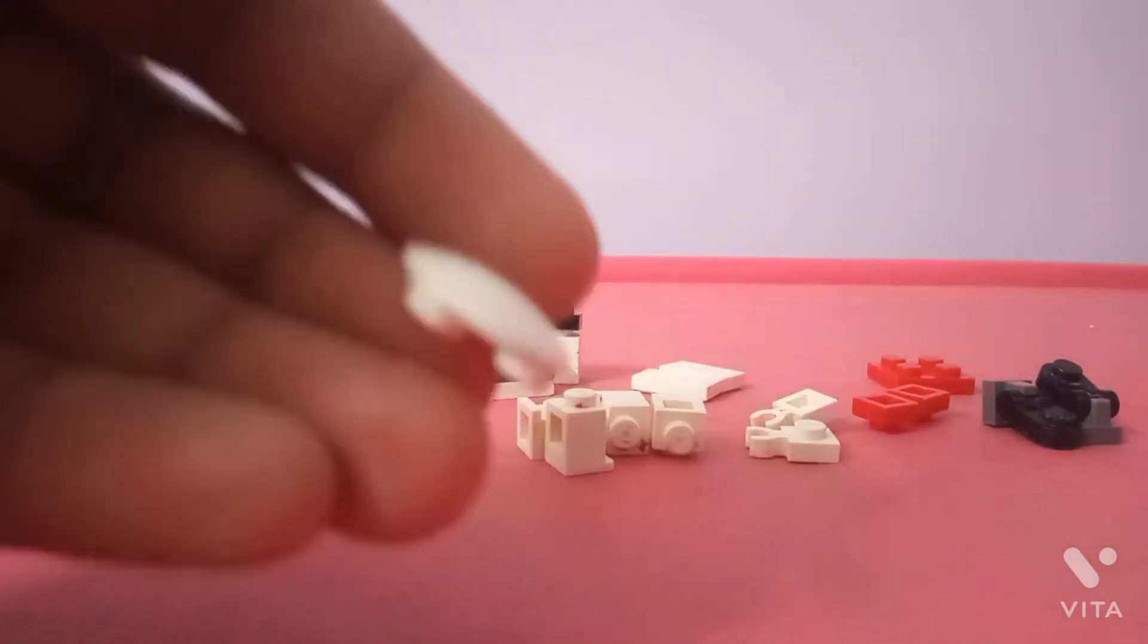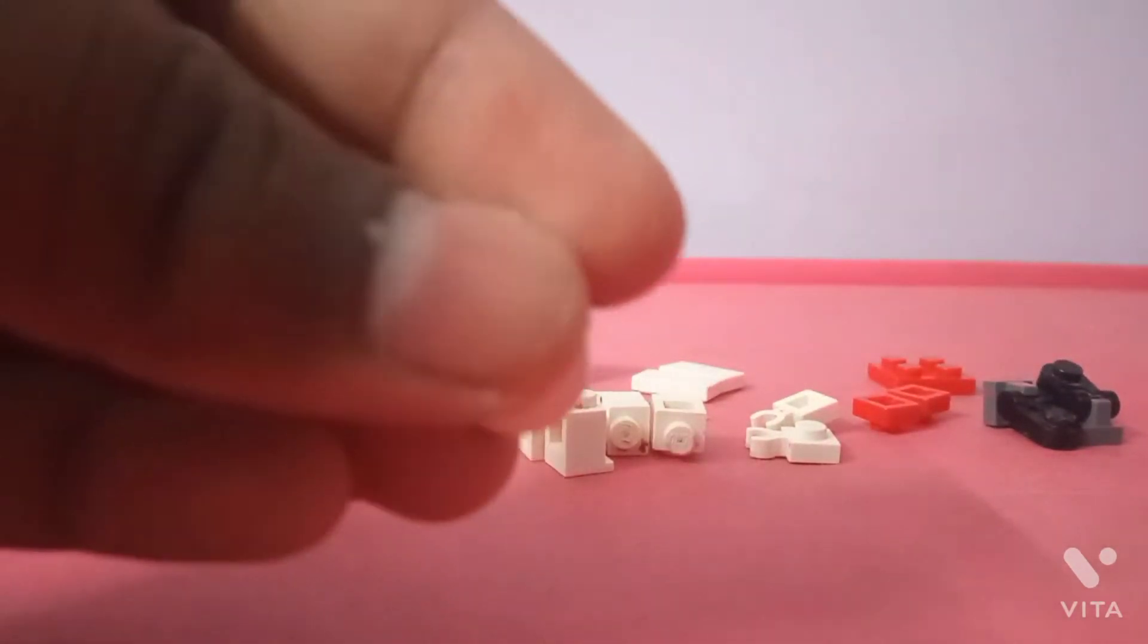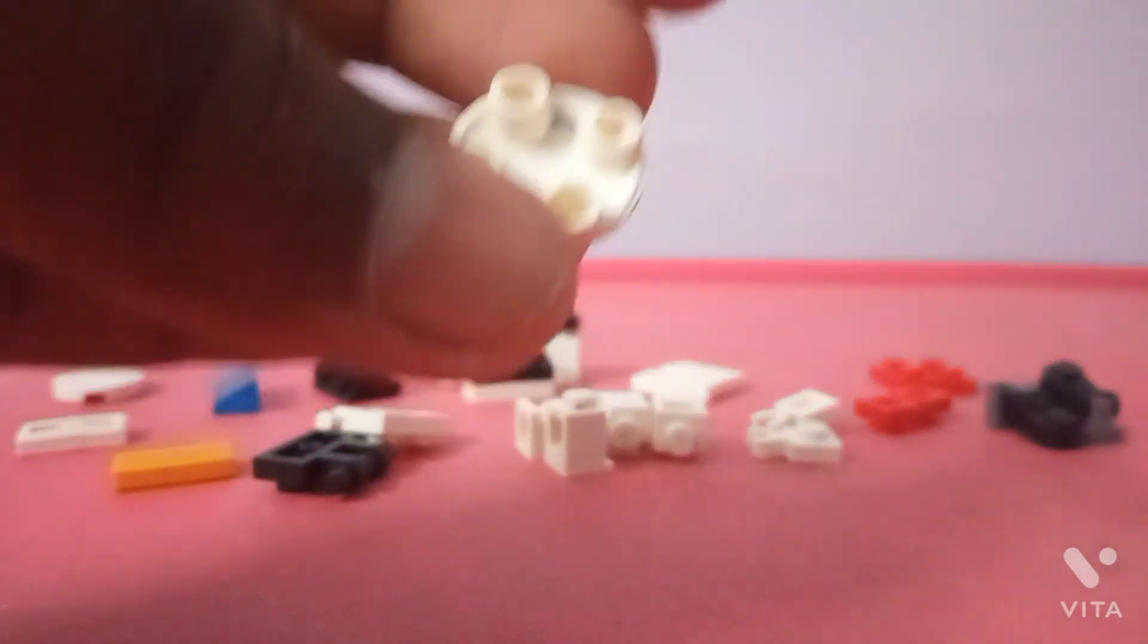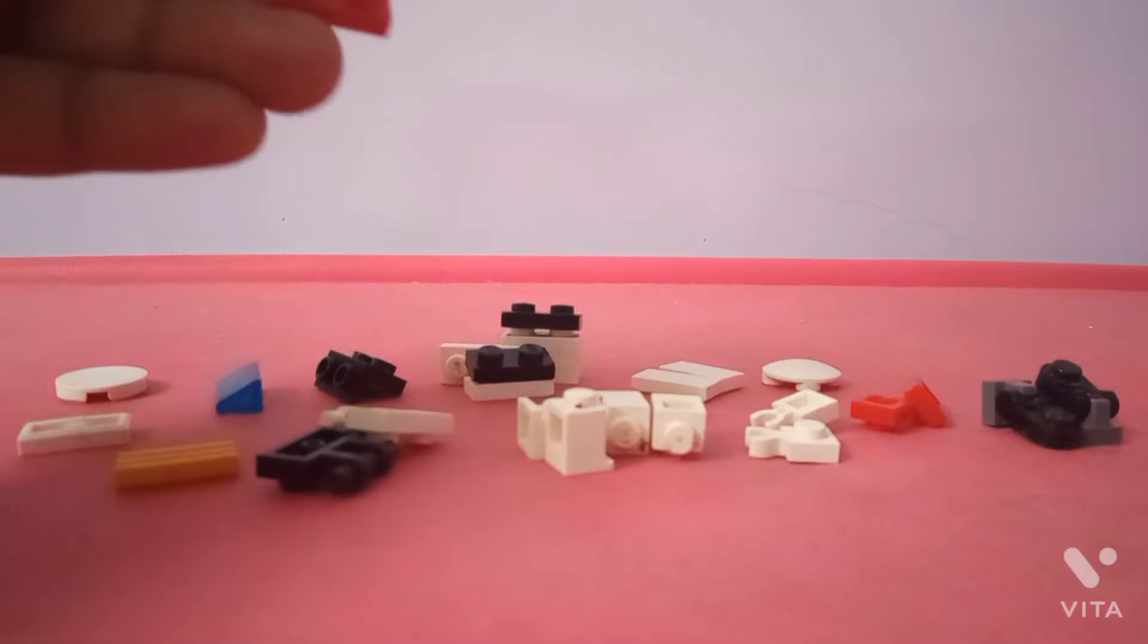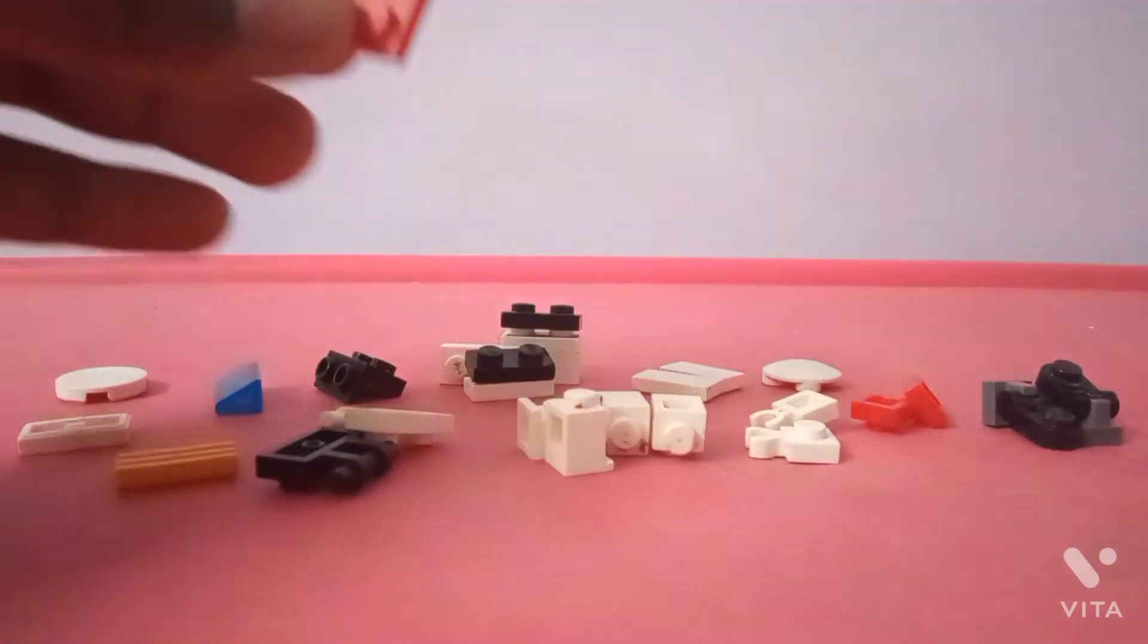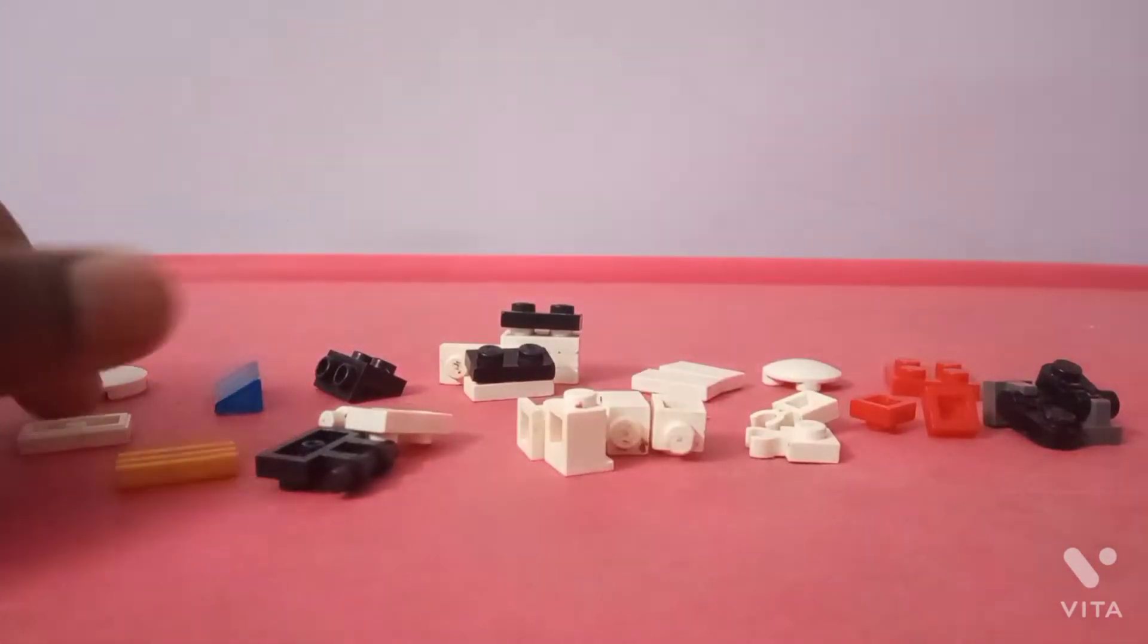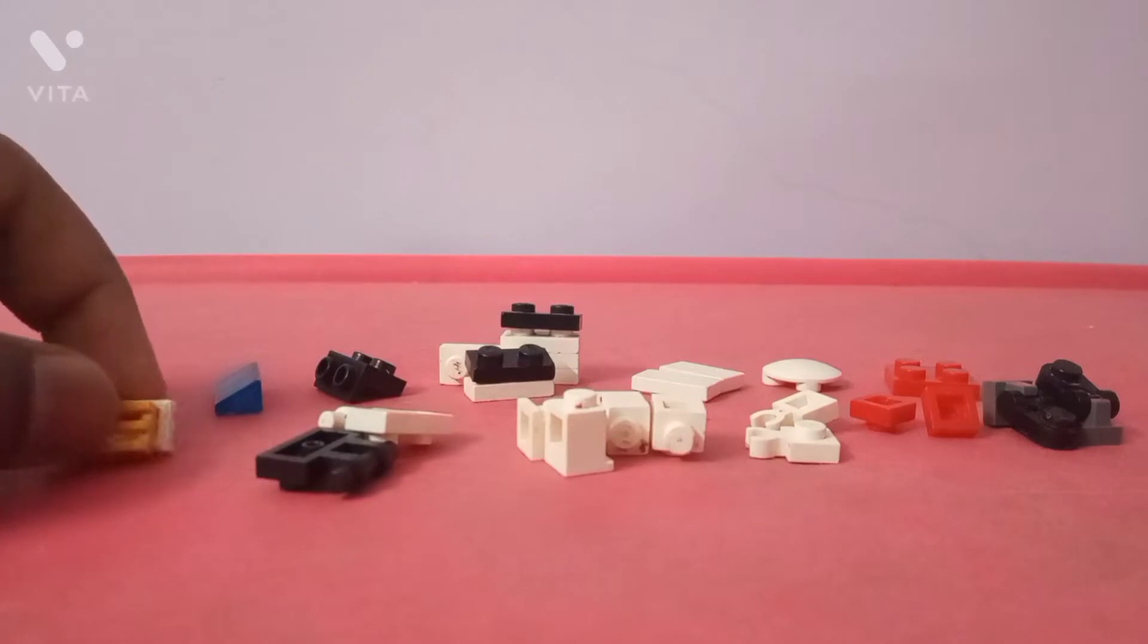Next you need two 1x2 tiles. Next you need whatever this piece is called. I call it the upturned dish piece. Then you need this 2x2 plate. And then you need two 1x2 grills or tiles. I just had a lot of grills, so I used them.